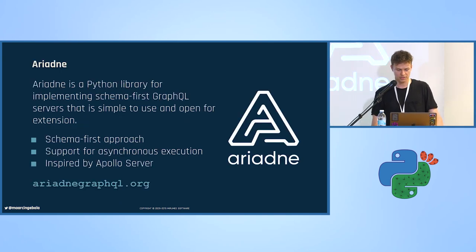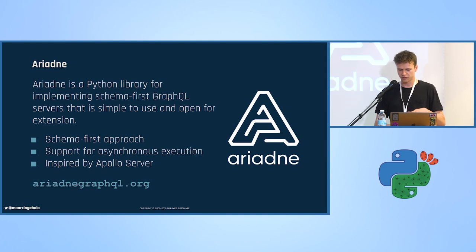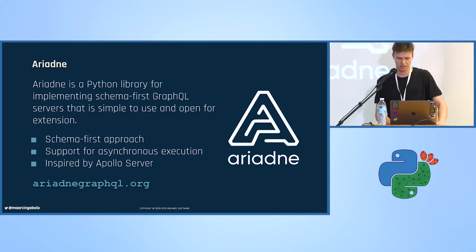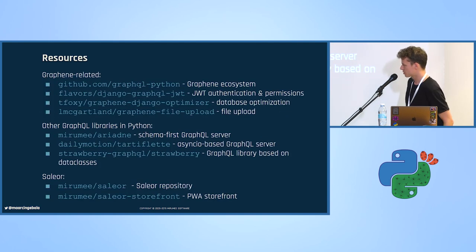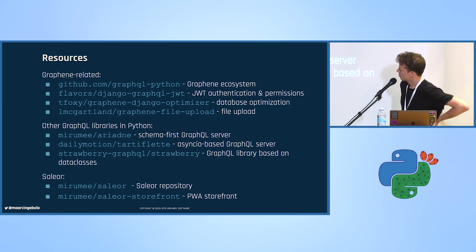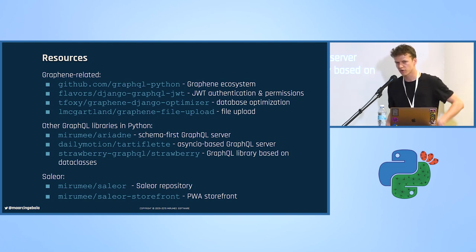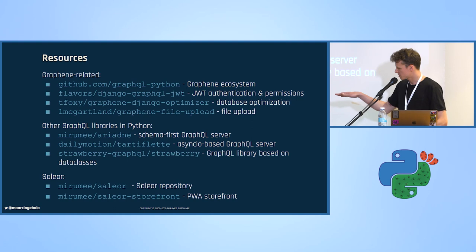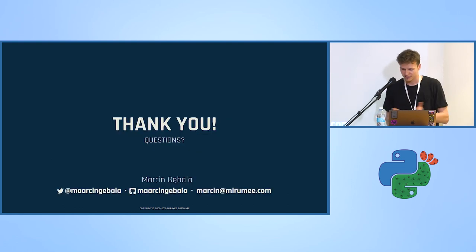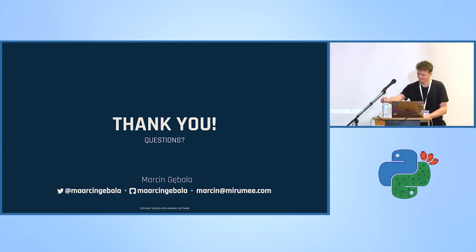Fortunately, new libraries are emerging and the whole GraphQL ecosystem in Python is just forming. There's a new library called Ariadne — a schema-first approach where you write the schema first and then write resolvers for it, inspired by Apollo Server. I've prepared a bunch of resources: the first four are links to the Graphene ecosystem and helpful libraries. Then there are three other GraphQL libraries in Python. And lastly, links to our project — Miromi slash Saleor — so you can check out how a fairly large Graphene codebase looks like. Thanks for listening.